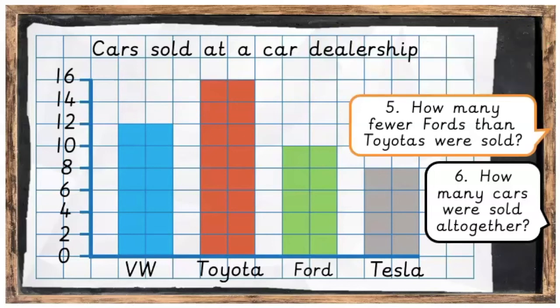Question 5: How many fewer Fords than Toyotas were sold? If we go up to the Toyota and then count in 2s — 2, 4, 6 — altogether there were 6 fewer Fords than Toyotas sold, because the difference is 6.